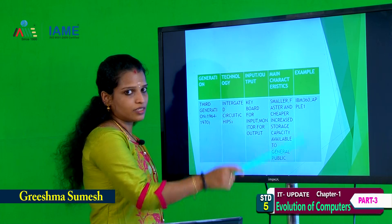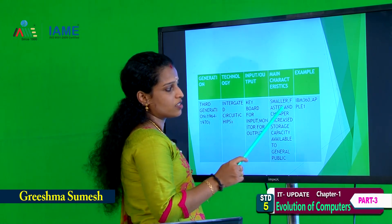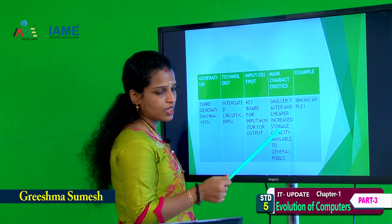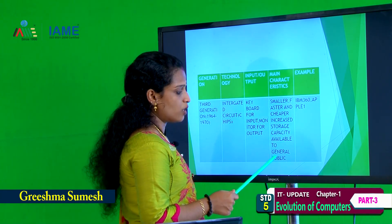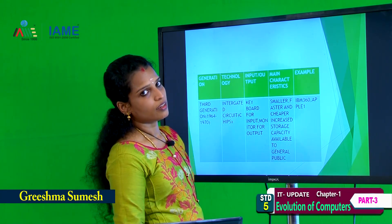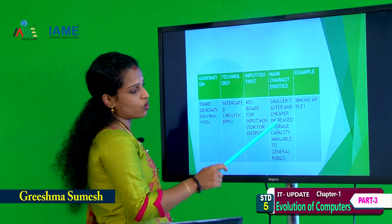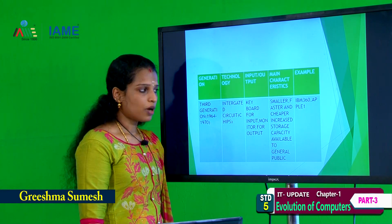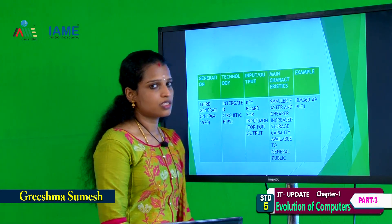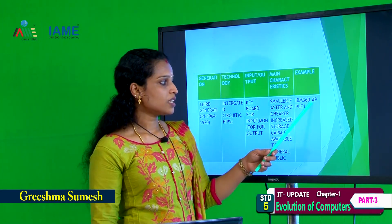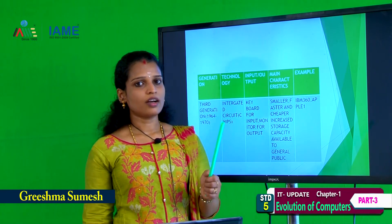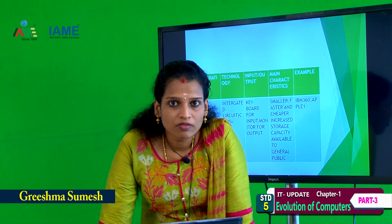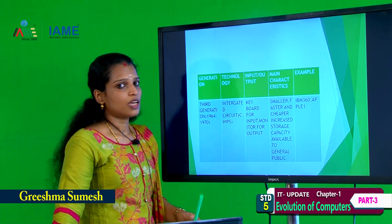Main characteristics: smaller, faster and cheaper. Increased storage capacity, available to the general public. Examples: IBM 360 and Apple 1.